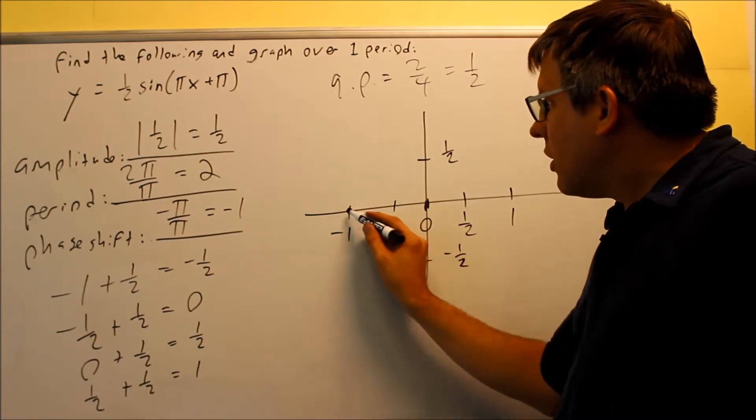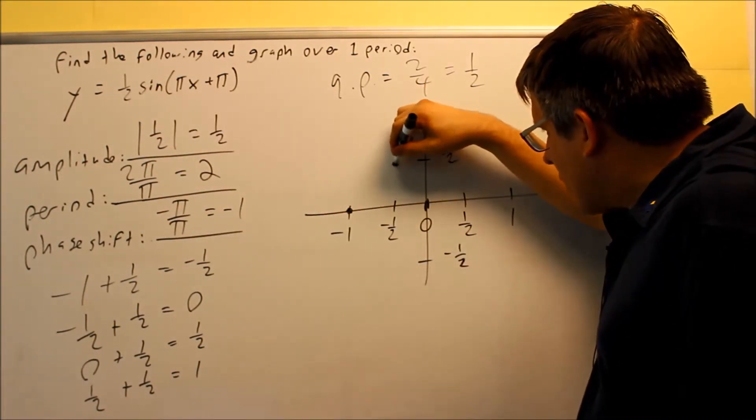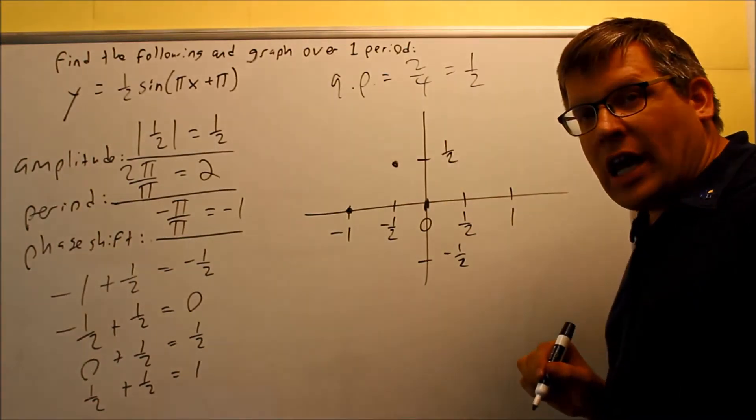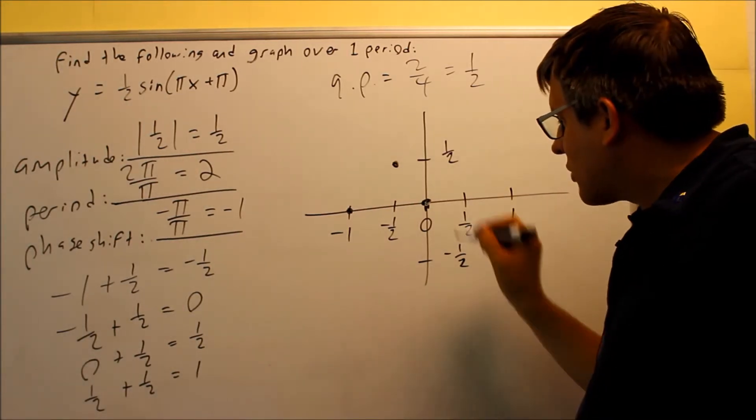Starting here, because it's a positive, I'll begin by going up. So my next key point, it's going to be up here at 1/2. Then it'll drop down, it's going to go through the origin, x axis,